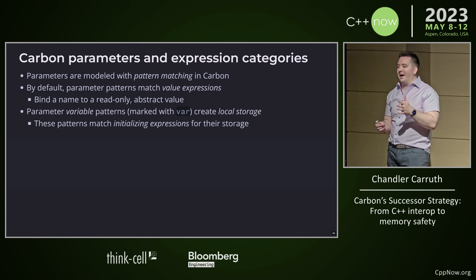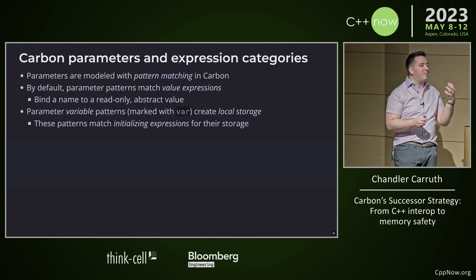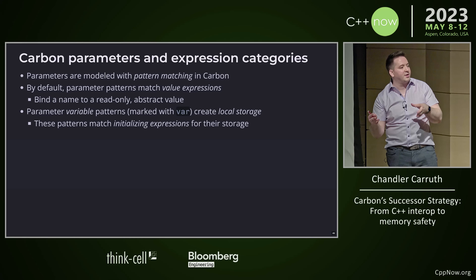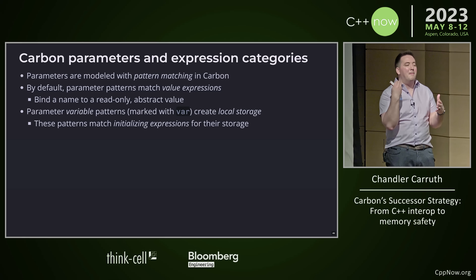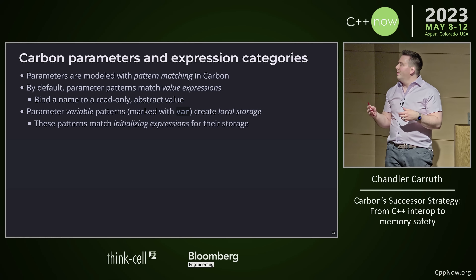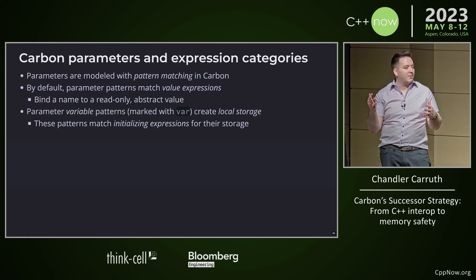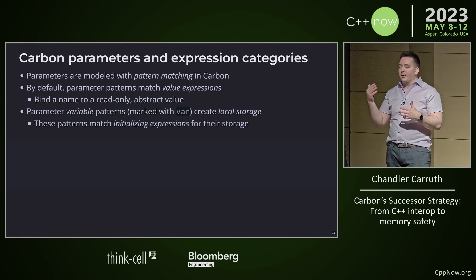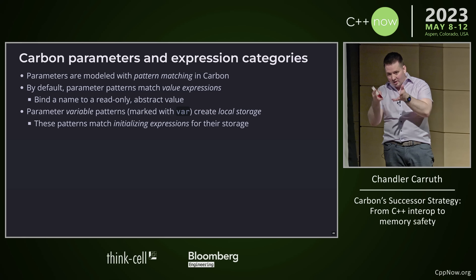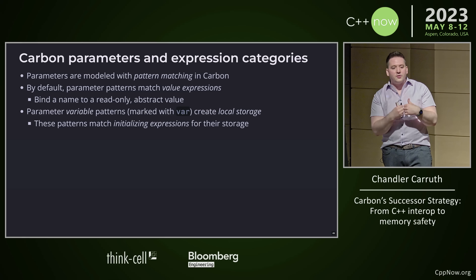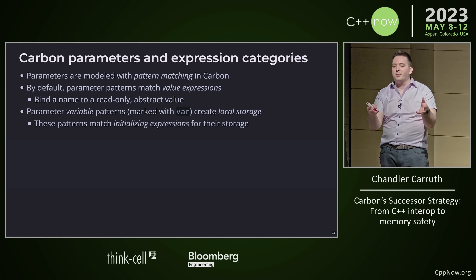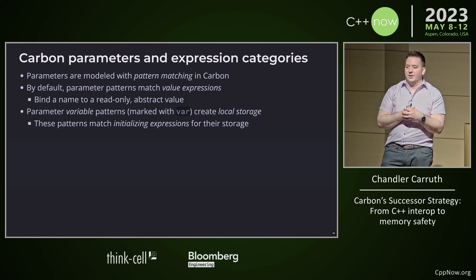Now we have some expression categories to explain both how parameters work and why this was necessary. Parameters in Carbon are modeled as pattern matching — they're modeled as parameter patterns that match against argument expressions. How we structure those patterns is a reflection of the different categories of expression we actually want to match. By default, the parameter patterns match value expressions, these kind of beautiful abstract things. We also have variable patterns, marked with the keyword var. These patterns actually allocate local storage just like a local variable. And what they match are initializing expressions — the argument's initializing expression directly initializes the allocated storage of the parameter.